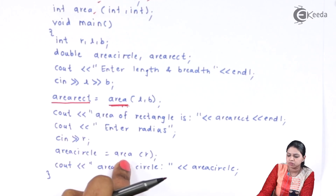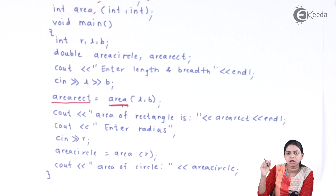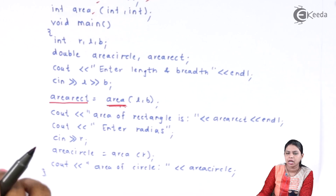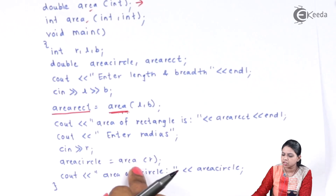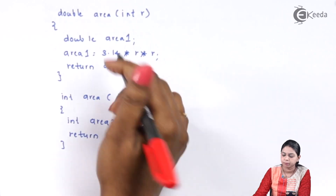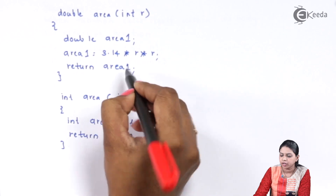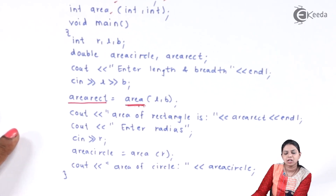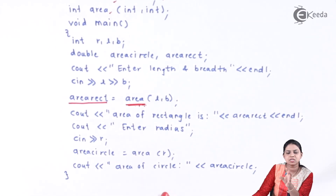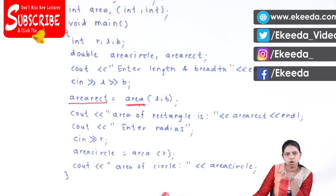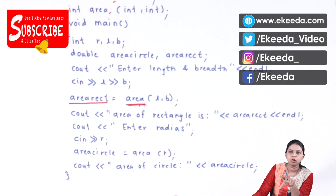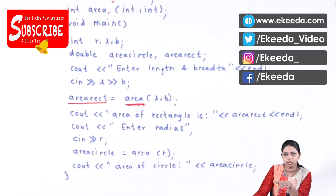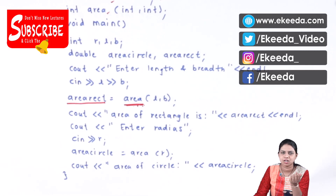Again, when the compiler calls the function for the circle, it searches for a function named area with one parameter and replaces the call with that function body. The calculation is done and the result is collected in the variable area circle. So both functions had the same name — area — but different numbers of parameters, which is why we call it function overloading. I hope you have understood the concept of default arguments and function overloading. In the next video, we will study recursion. Thanks for watching.